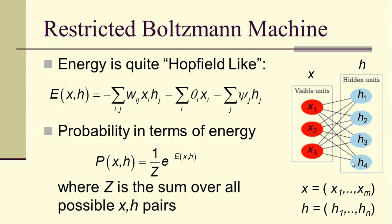And then we can talk about the probability of an X, H pair as being exponential of the negative of the energy. And we have to divide by Z, which is the sum of the overall possible X, H pairs, so that we get the sum of all the probabilities is 1.